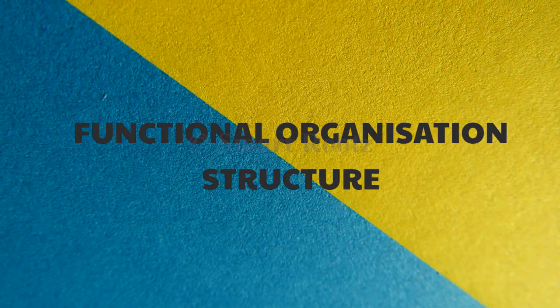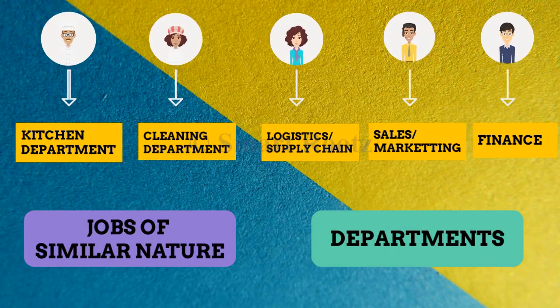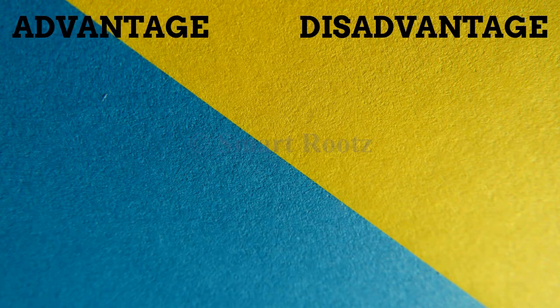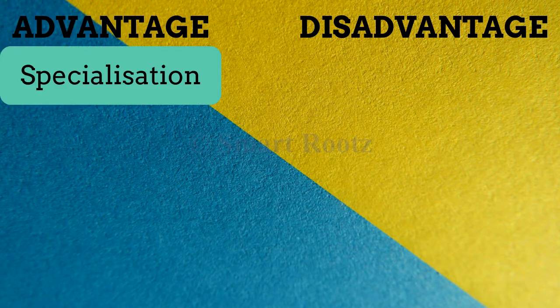In the process of organizing, Jo has grouped jobs of similar nature based on functions like the kitchen department, the sales department, or the finance department. She has created an organization structure based on functions. In a functional organizational structure, jobs of similar nature are grouped together and departments will report to a coordinating head. Functional structure leads to specialization as employees perform similar tasks in the department, thereby improving efficiency.